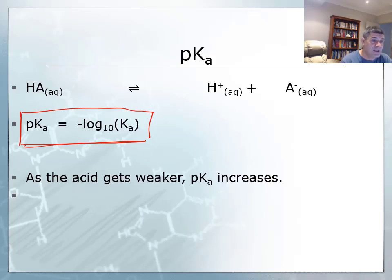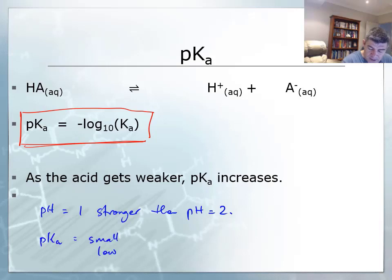The problem with the pKa value is like the value for the pH. As the acid gets weaker, the pKa increases. So we know, for example, that pH of 1 is going to be a stronger acid solution than a pH of 2, and this scale works the same for the pKa. So a pKa value which is small or low is going to be stronger than a high pKa. The alternative to that is as the acid gets weaker, the pKa increases. Have a look at the relationship between Ka and pKa to give you an idea of how these things can actually be used to determine the relative strength of an acid solution.